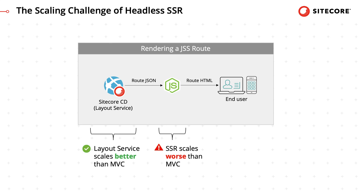Load testing during development demonstrated that JSS CDs are roughly 20% faster than MVC CDs. However, while layout service scales better than MVC, Node in general — and especially server-side rendering of virtual DOM-based frameworks like React, Angular, and Vue — scales worse. This is because Node has to virtualize the DOM before it can even begin rendering, which is extra work that's normally done by the browser and is very time intensive. So if you expect your app to face very high load, investing in CDN-based deployment topologies may be necessary to achieve the desirable performance.